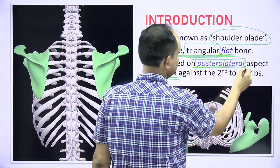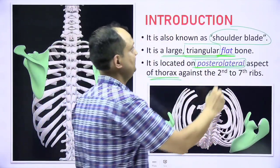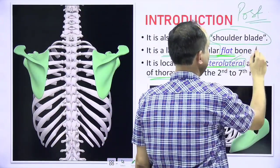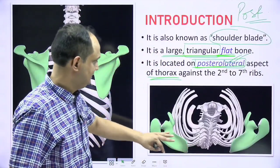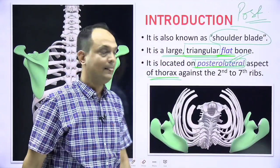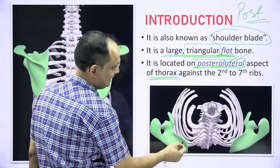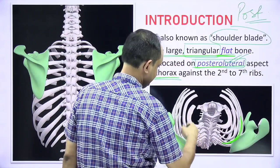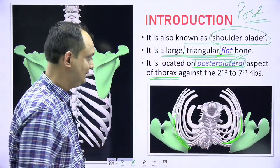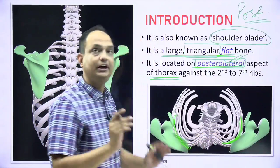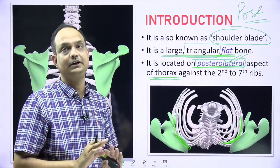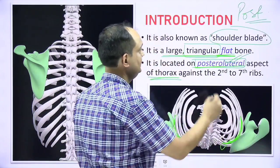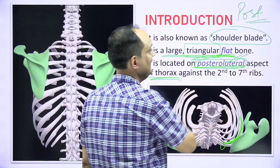Now what is the meaning of posterolateral? It is not purely posterior but it also has a lateral component. This is the superior view of your chest wall. You can see that the Scapula is following the curvature of your ribs — it is accommodating the outer convexity of the ribs, and that is why it is not purely posterior but posterolateral in placement.